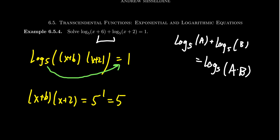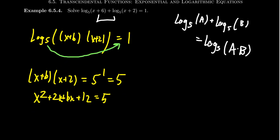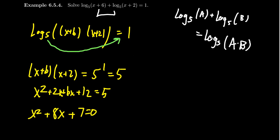Now we have this quadratic equation. Let's foil out the left-hand side. We'll get x squared plus 2x plus 6x plus 12 equals 5. Combining like terms, 2x plus 6x is 8x. If we subtract 5 from both sides, we get 12 minus 5, which is 7. So we're looking for factors of 7 that add to 8. We get (x+7)(x+1) equals 0, giving us two potential solutions: x equals negative 7 and negative 1.